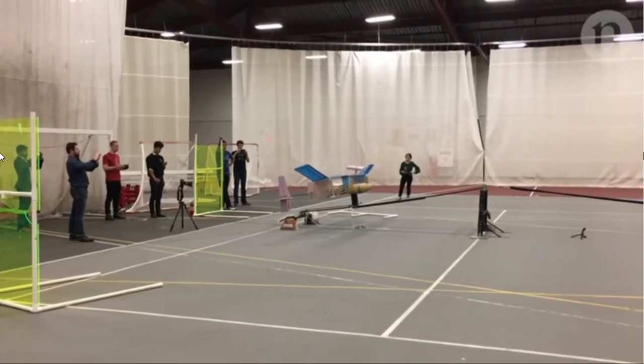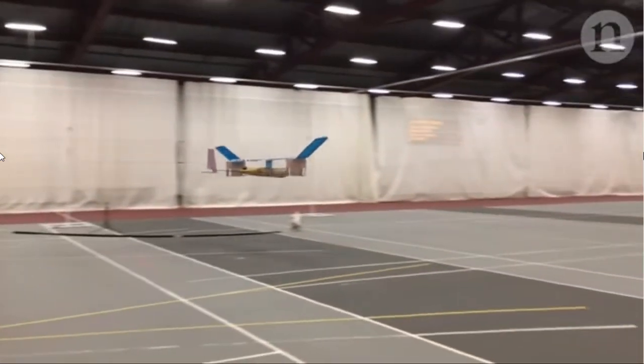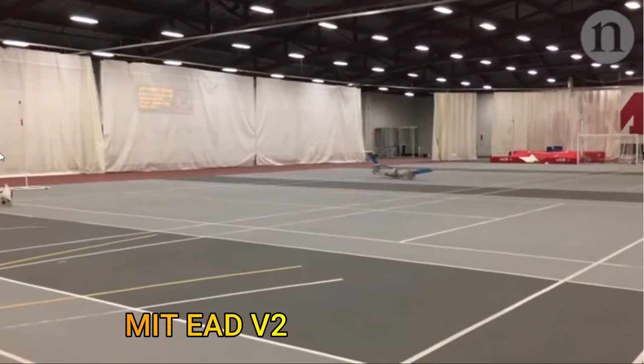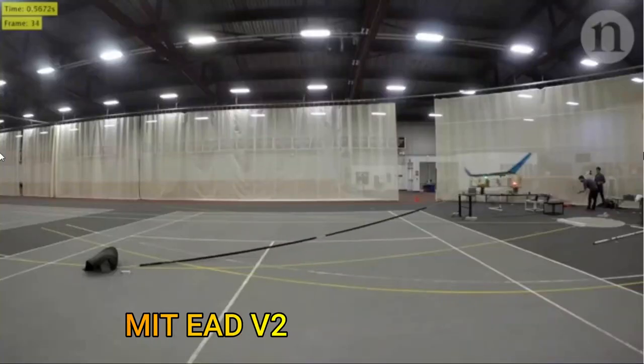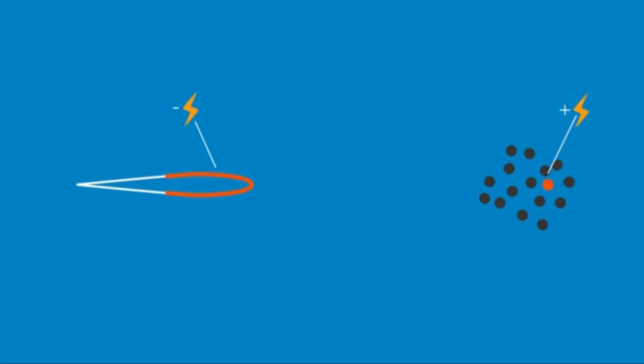It was a sight to behold as the aircraft flew without any propeller or any turbine engine. The aircraft in question was the MIT EAD V2 and had a wingspan of 5 meters and weighed just 2.5 kilograms. It had thin electrodes that extended through its wings.